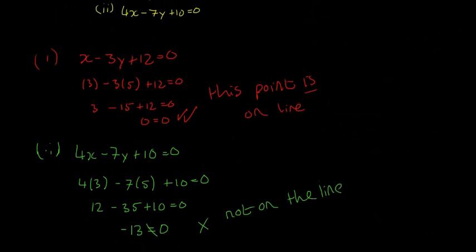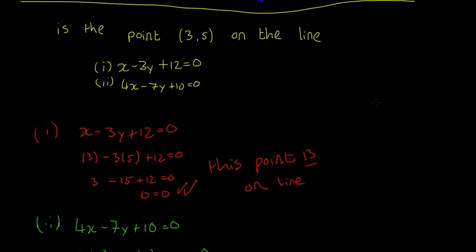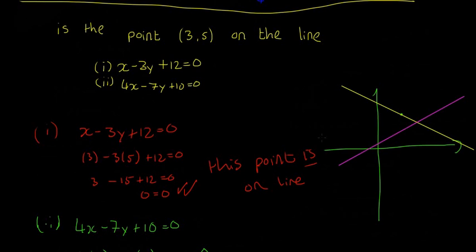It's as simple as that - just a quick method to verify if a point is on a line. Let me show this on a graph. The point (3, 5) is somewhere up here.